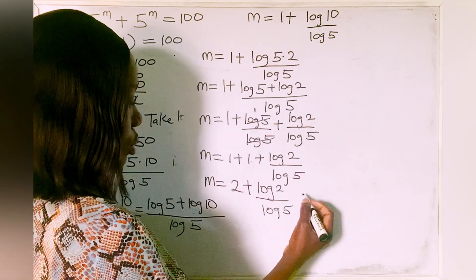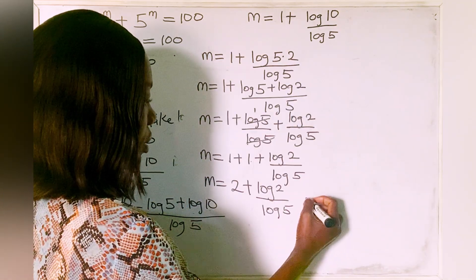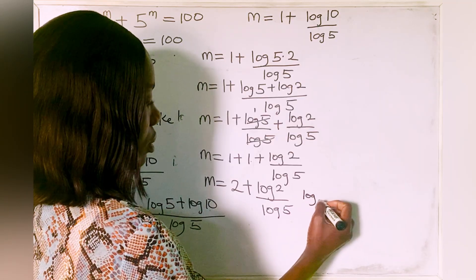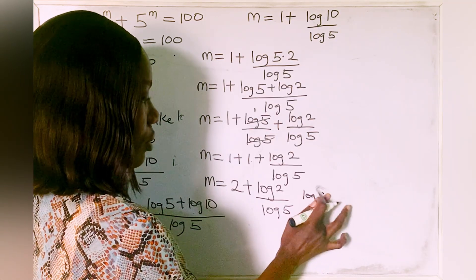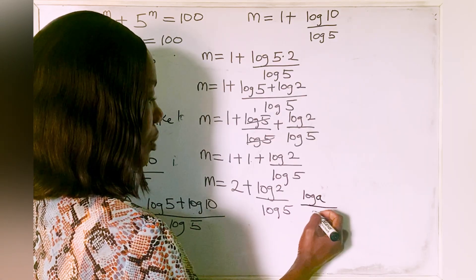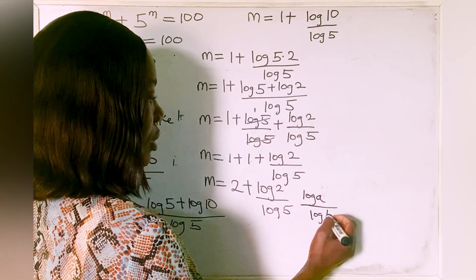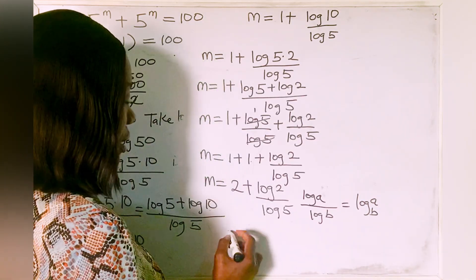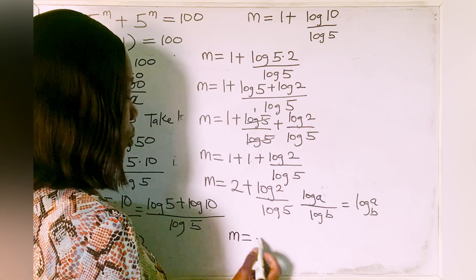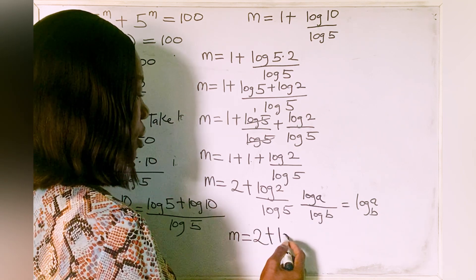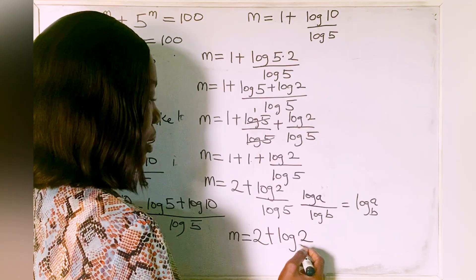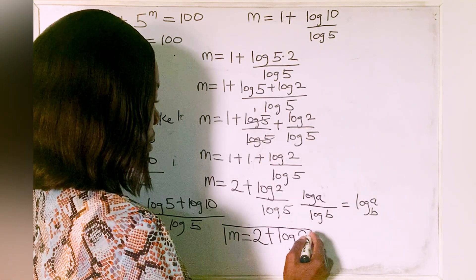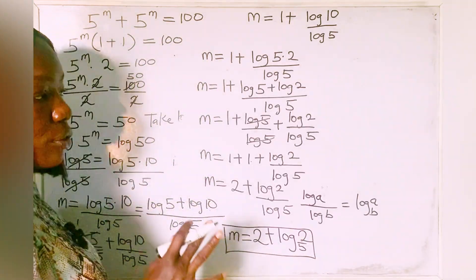Now we apply the change of base rule, where log a over log b is the same thing as log a base b. So log 2 over log 5 becomes log 2 base 5. Therefore m is equal to 2 plus log 2 base 5. That is our answer for the value of m.